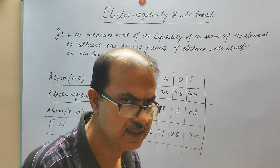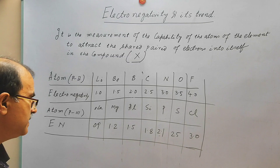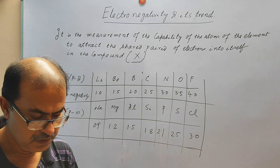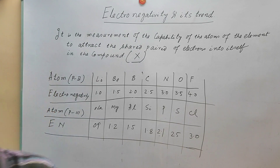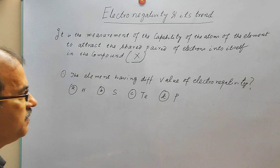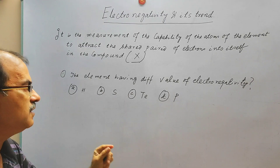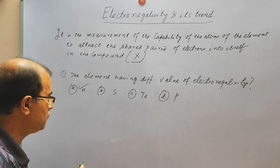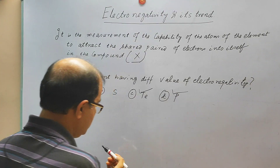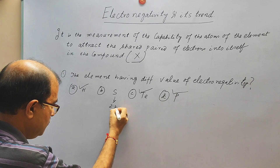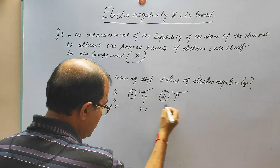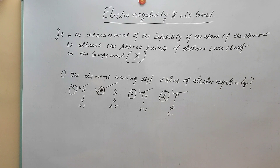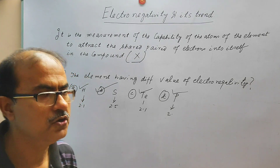There are a lot of questions you can have in exams on this topic. One question: which element has a different electronegativity value from the others? Among the options, hydrogen has an electronegativity of 2.1, phosphorus also 2.1, but sulfur has an electronegativity of 2.5. So the answer to this question is sulfur, because it has a different electronegativity value.